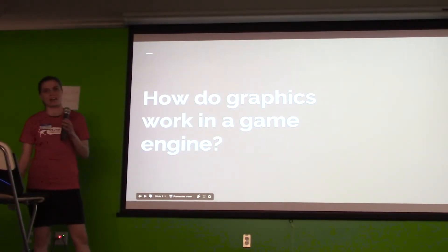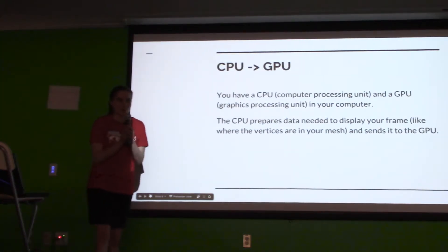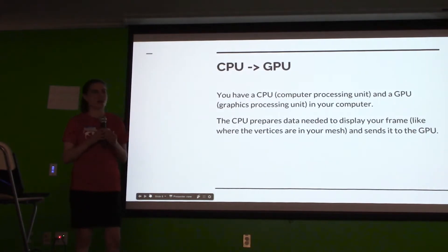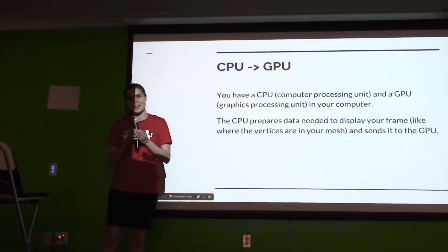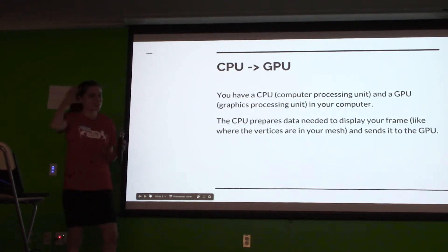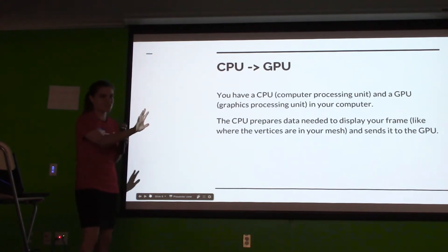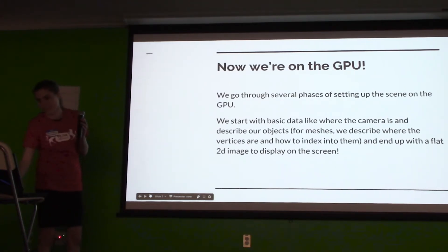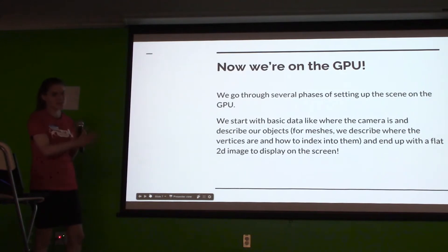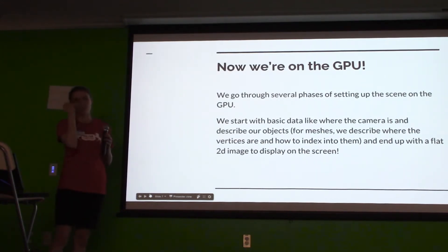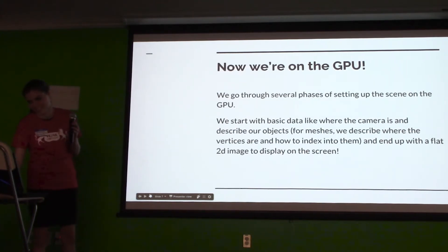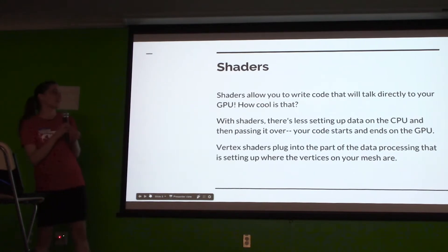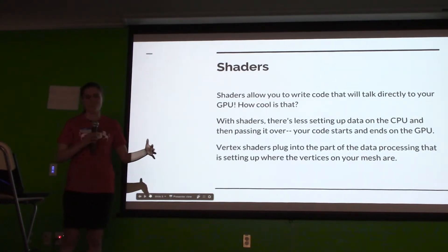How do graphics work in a game engine? Everything starts on the CPU. You have a CPU and a GPU in computers, and a lot of processes happen on the CPU — the GPU is meant for graphics processing. The CPU sets up everything you need: here's where the camera is, here's where all my mesh data is, and then it sends it to the GPU and says go render that. The GPU starts with all this data and at the end you get the flat 2D image that constitutes your frame. It's just flashing 2D images in front of your face, and it's really important to keep that at 90 frames per second or higher in VR, or else people will get sick.